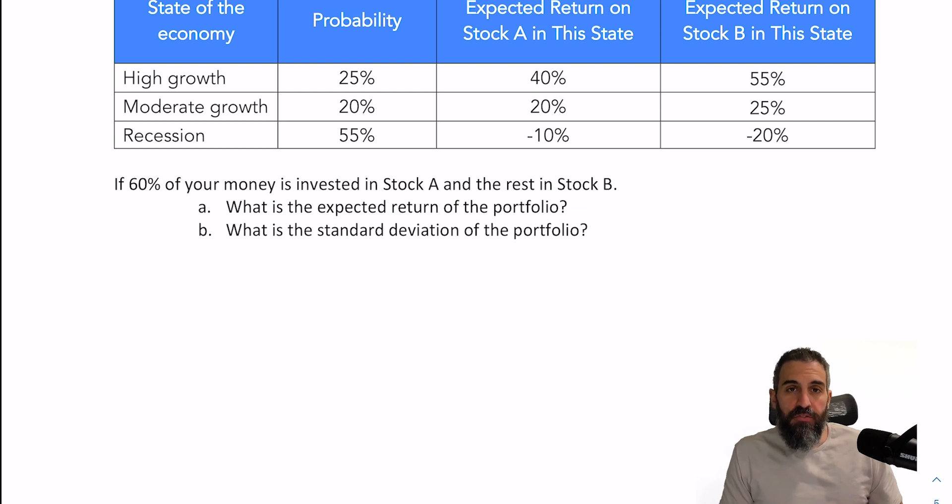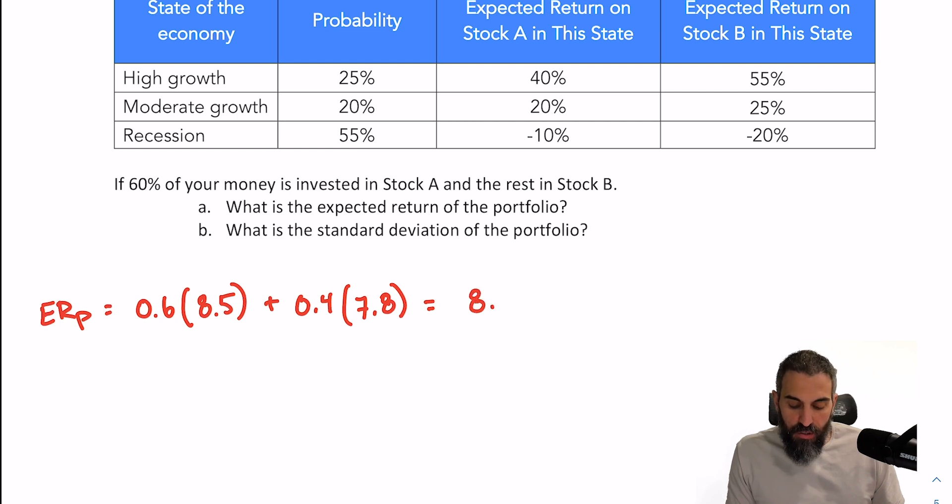In the final question, you're asked to find the portfolio expected return and the portfolio standard deviation if you were to put 60% of your money in stock A and 40% of your money in stock B. So to find the expected return of the portfolio, I'm going to take the weighted average. So 60% of my money times the expected return of stock A, which is 8.5, plus 40% of my money times the expected return of stock B, which is 7.8. And that'll give you an expected return in your portfolio or a weighted average of 8.2%.